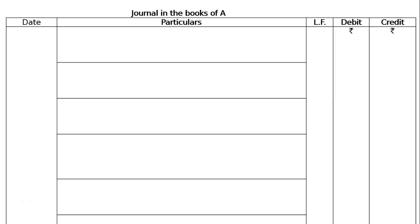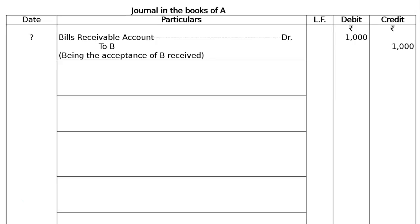First, A drew a bill on B. Hence, the first entry will be: Bills Receivable Account debited to B — being the acceptance of B received. Rs.1000 in both debit and credit. There is no date, so a question mark is placed.